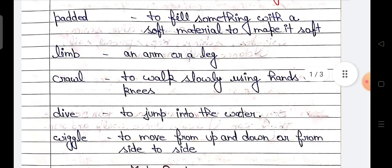First word is padded. Padded means to fill something with a soft material to make it soft. Next word is limb - an arm or a leg. Next word is crawl. Crawl means to walk slowly using hands and knees.